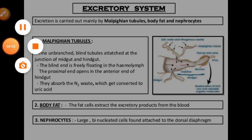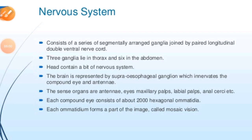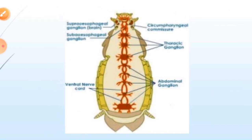Let's move to another system — the nervous system — because without a nervous system, organisms generally cannot function. Interestingly, the cockroach can live even without its head for a period of time. The nervous system of cockroaches consists of a few segmental arrangements of ganglia joined by longitudinal connectives, as you can see in the diagram.